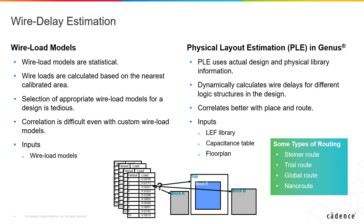Furthermore, we use a guess for the fanouts and loads to estimate the maximum wire length, then calculate the corresponding resistance and capacitance of the estimated wire length, and finally the delay of the wire. This multi-step process can be very tedious and result in a very pessimistic view of the wire delays and thus the design. Thus, wire load models can be challenging when it comes to correlation to the actual place and route tools.